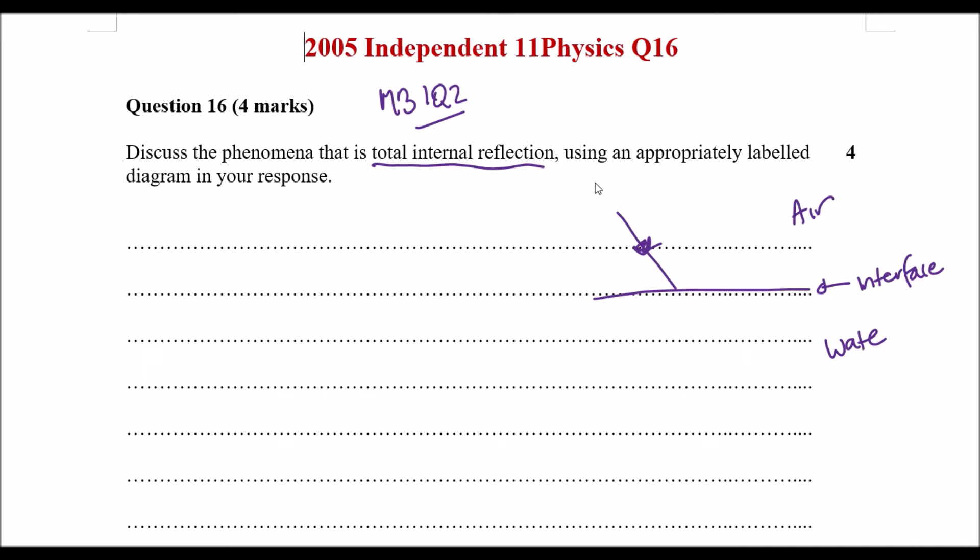The light ray that we have here usually sort of bends to a particular angle, usually towards the normal line that we have here.